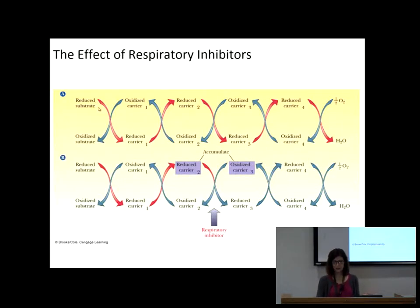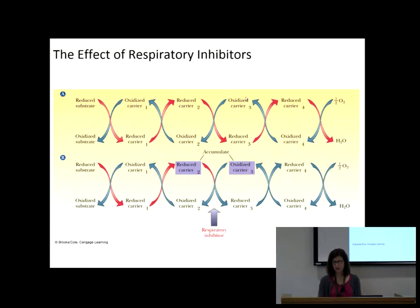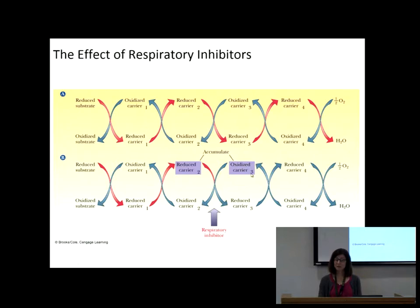Going back to slide 15: you have the reduced carrier giving electrons to the oxidized carrier, which now has the electrons, and so on. If you put something in that inhibits one reaction, both the reduced carrier before it and the oxidized carrier after it start to accumulate — like damming up a waterfall. The water behind the dam builds up. If those two species accumulate out of everything in the complex, they must be associated together — reacting with each other.